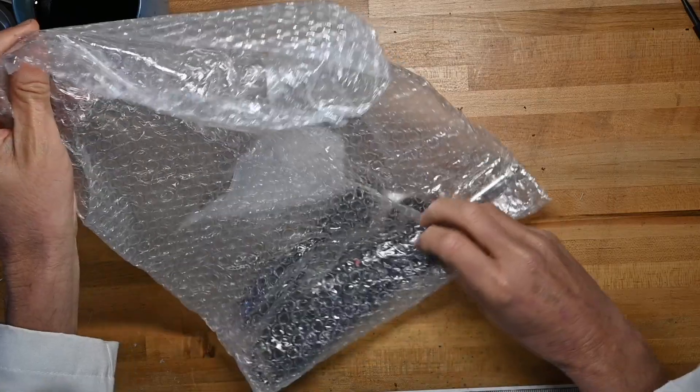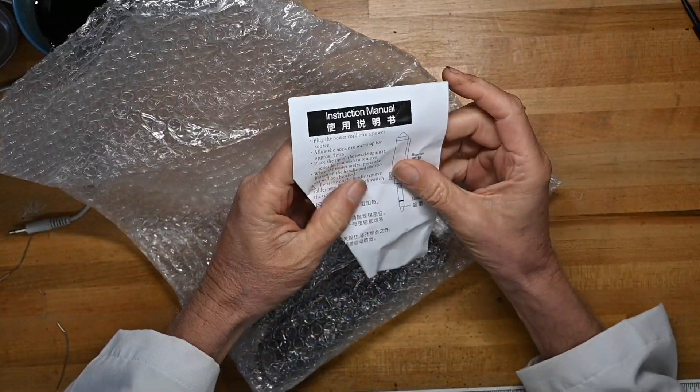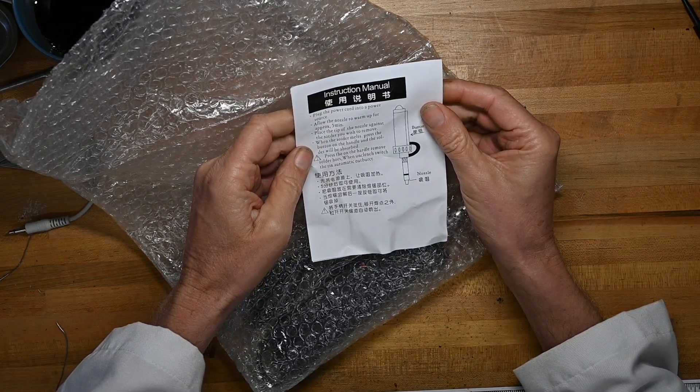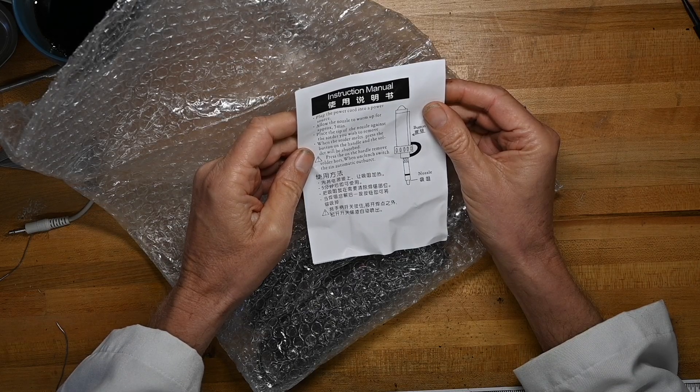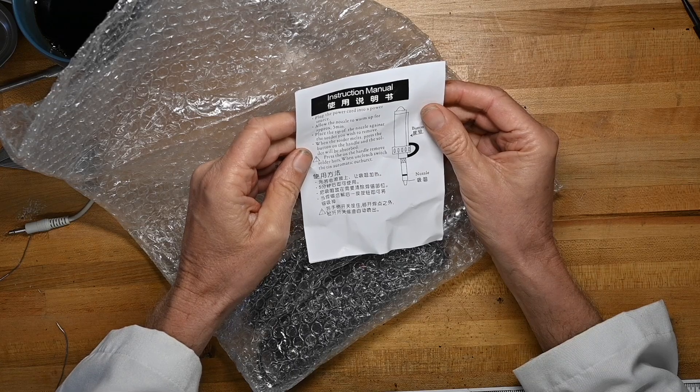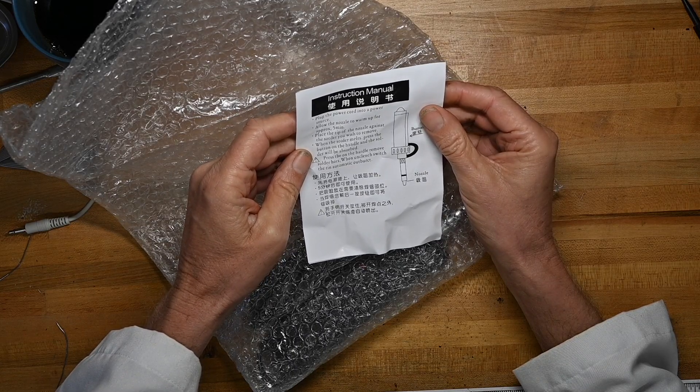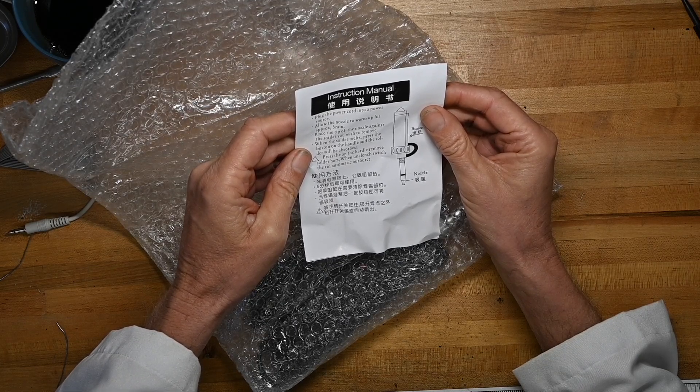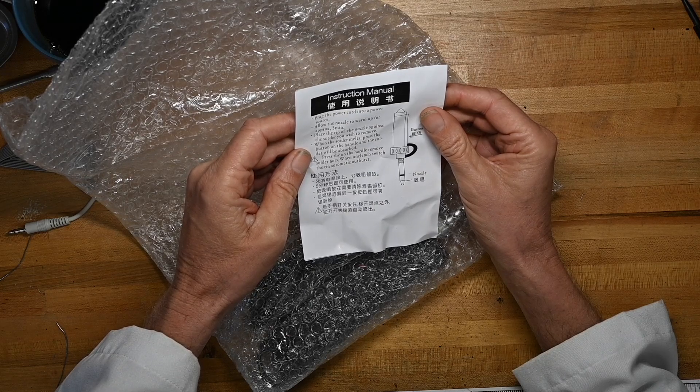Let's unwrap this little fella. Got a piece of paper, instruction manual. Plug the power cord into a power source. Allow the nozzle to warm up for five minutes. Press the tip of the solder against the solder you want to remove. When it melts, press the button on the handle and the solder will be absorbed. Press on the handle remove solder H-O-R-S. Maybe that means hose. When unclench switch the tin automatic outbursts.